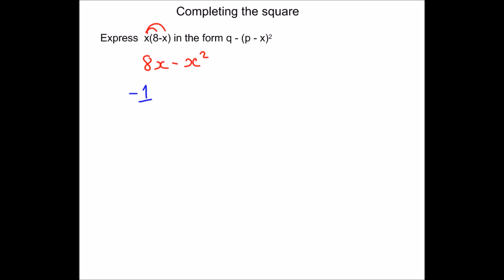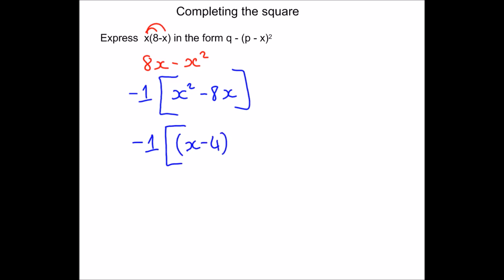Expanding: x times 8 is 8x, and x times minus x is minus x squared. Now using the same method as before, the number in front of x squared is minus 1 — I'm multiplying x squared by minus 1 to get minus x squared. I'll take that outside my square brackets: minus 1 times x squared stays as x squared, and minus 1 times minus 8x gives minus 8x inside the brackets. There's nothing to add on the outside so I'm just left with my square brackets.